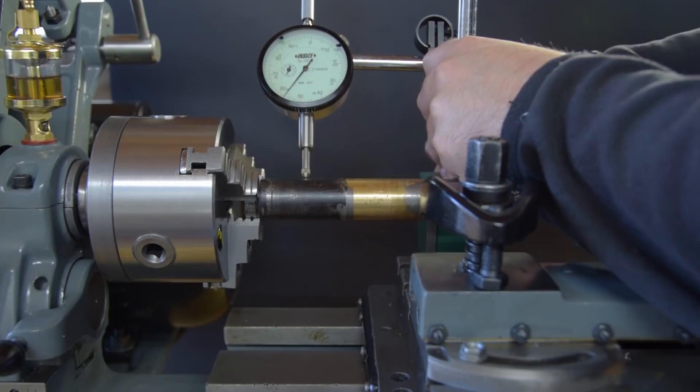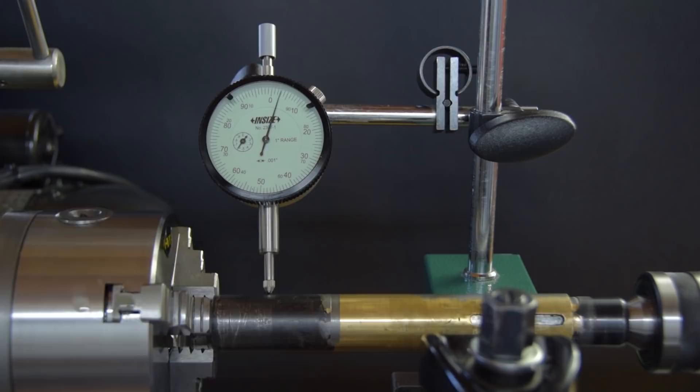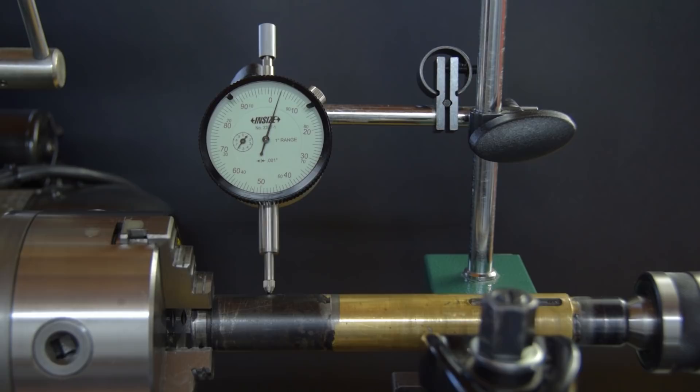So first job is to hold the sleeve in the lathe. At this point I didn't have a four jaw chuck. The three jaw runs within about one thousandths of an inch anyway, but the sleeve itself is not perfect. Just chucking the part up I get five thousandths run out. I think we can do better than that.